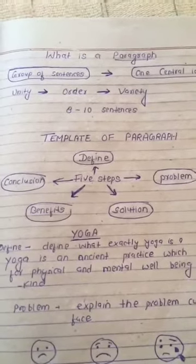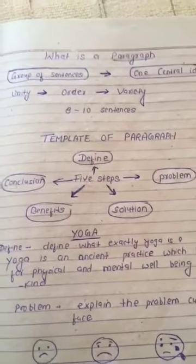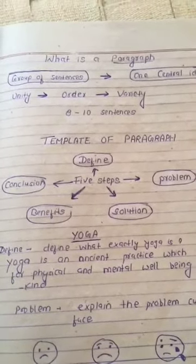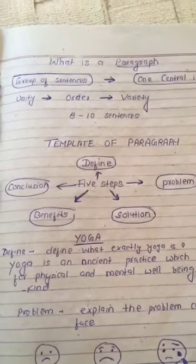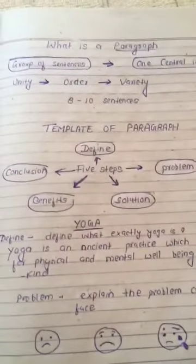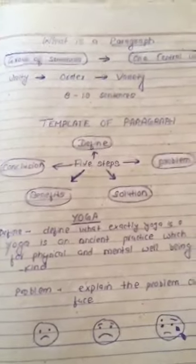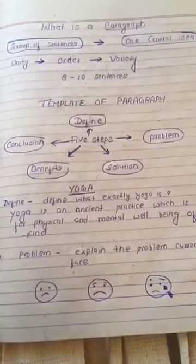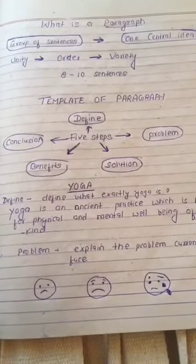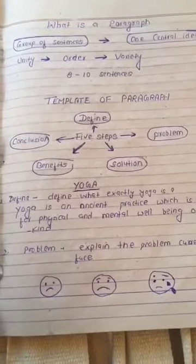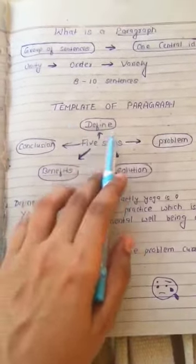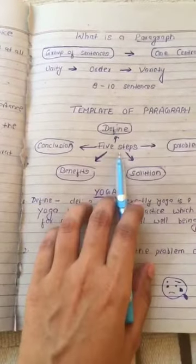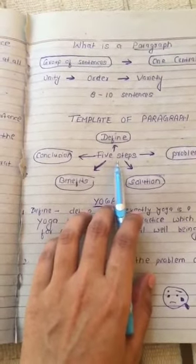Let's now discuss the chart or template of the paragraph. Here we have the template of the paragraph, which we will use to satisfy all the required conditions. There are five steps in all.